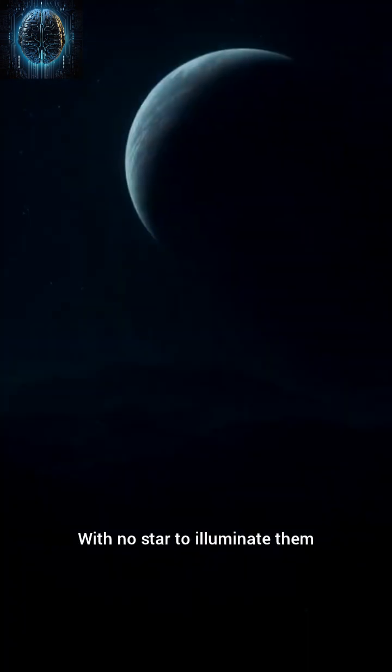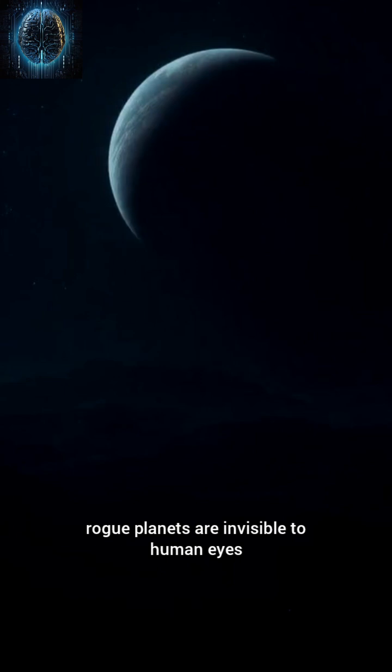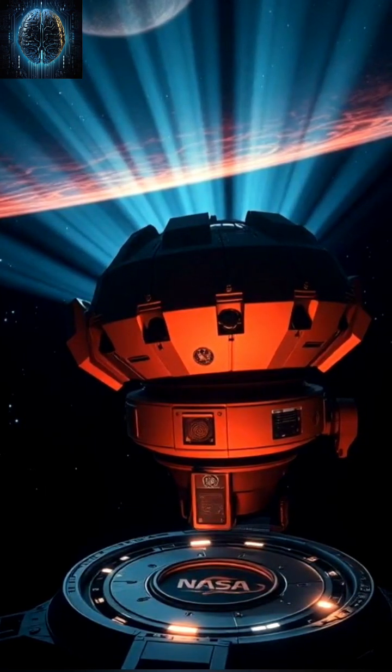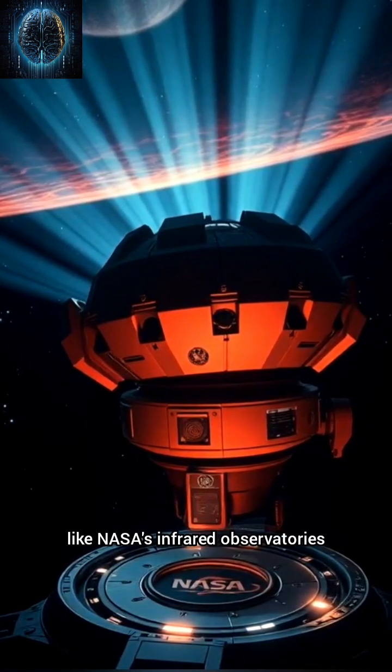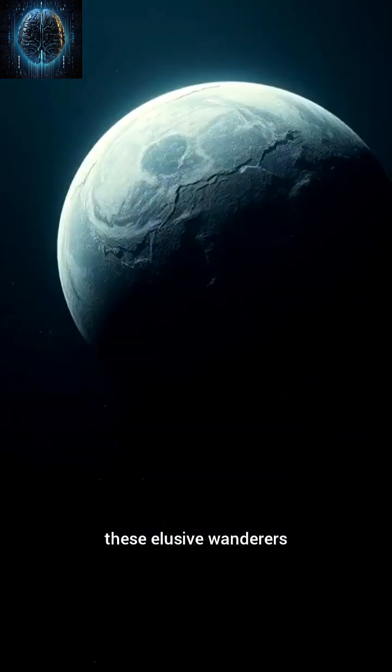With no star to illuminate them, rogue planets are invisible to human eyes. But advanced telescopes, like NASA's infrared observatories, are peeling back the darkness to discover these elusive wanderers.